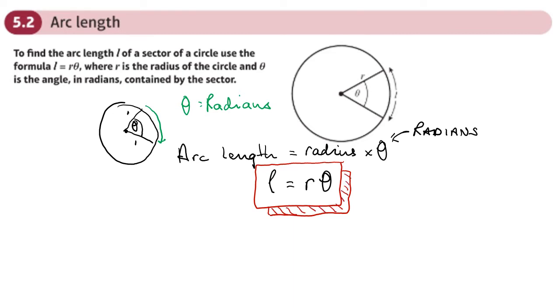So it's very simple. There's no 2πR multiplied by the angle over 360 like you did at GCSE. All we need to do is to do the radius times the angle, making sure that the angle is in radians. But we don't need to change our calculator to radians mode just yet. That's only if you need to work out sine, cosine, or tan of an angle that's given in radians.